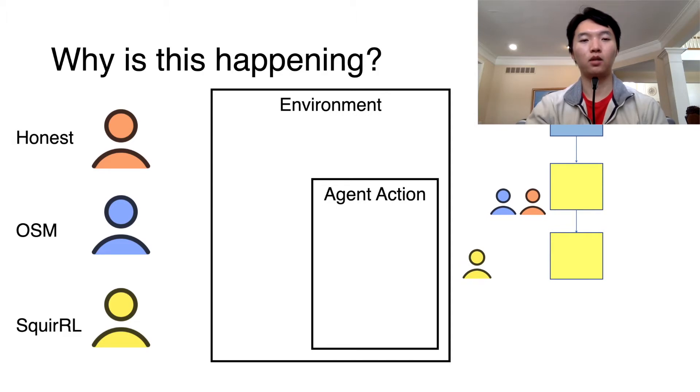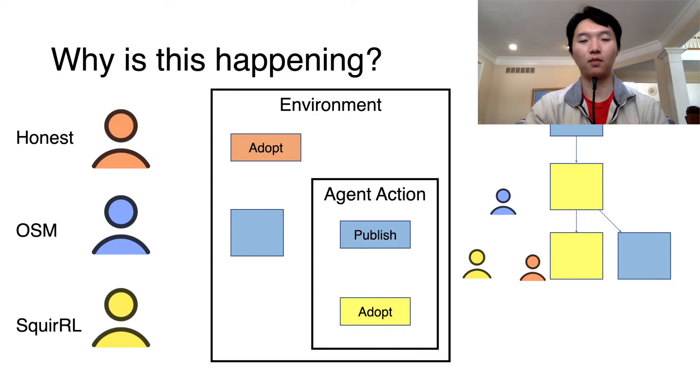Now, assume OSM mines a block in the next round. Then, of course, the OSM agent will not choose to adopt Squirrel's block and will instead publish its own. In this way, forking occurs, and the protocol is actually not being properly followed, which leads to irregularities observed in our results.